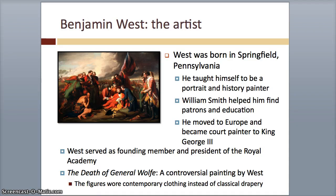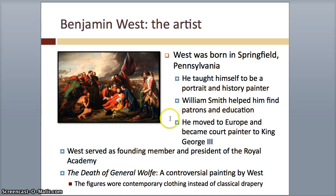We're going to look at a couple of art pieces, just like in the other previous sections. First, we'll talk about the artist Benjamin West, born in Springfield, Pennsylvania. He taught himself to paint. He moved to Europe and then became a court painter to King George. He was a founding member of the Royal Academy.